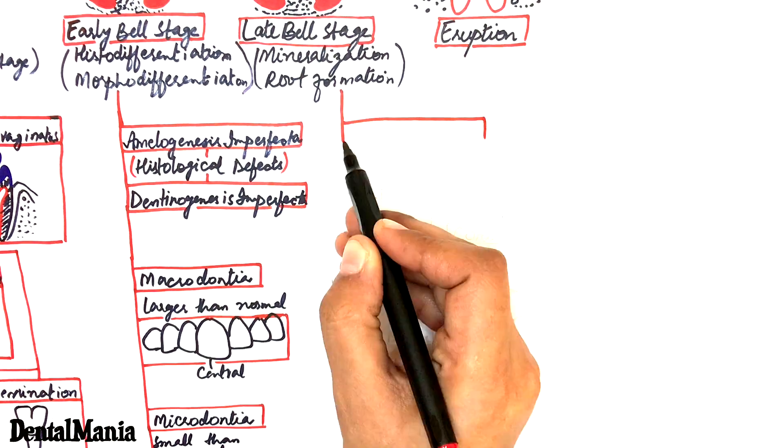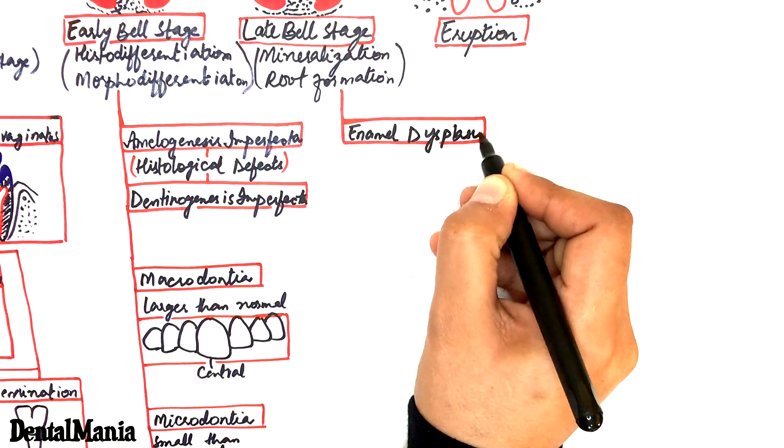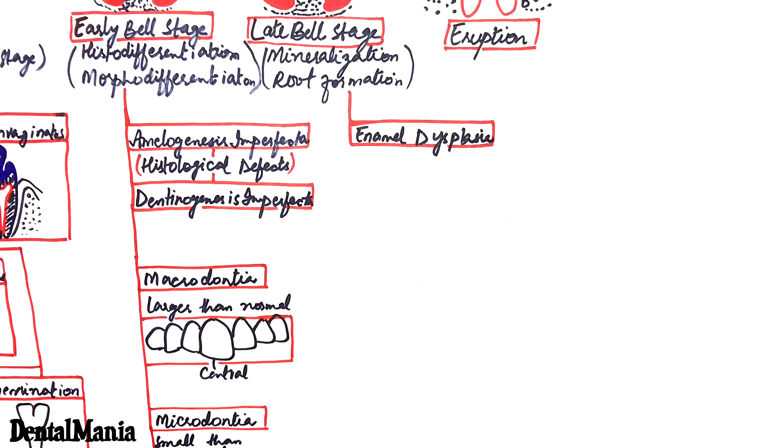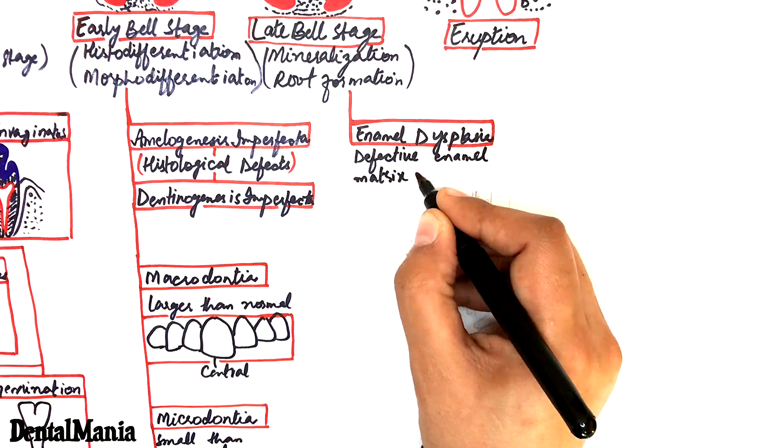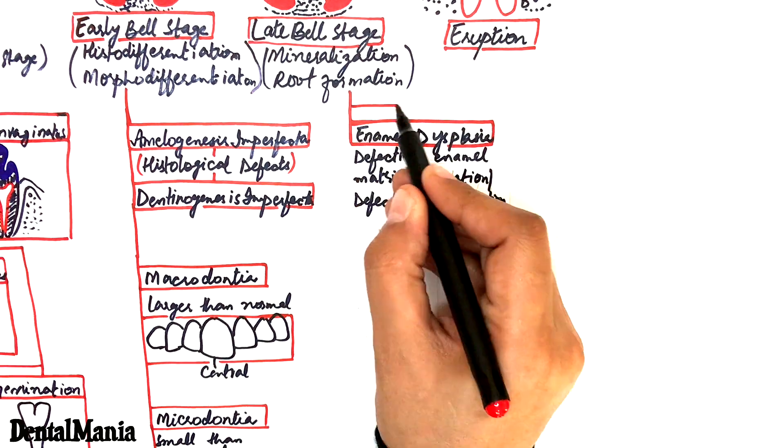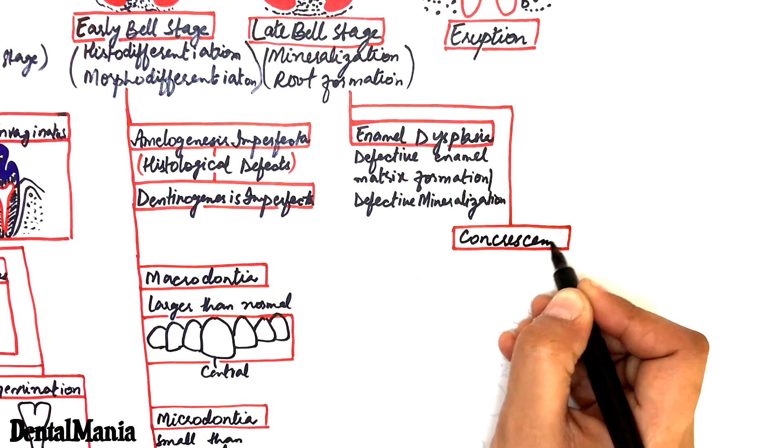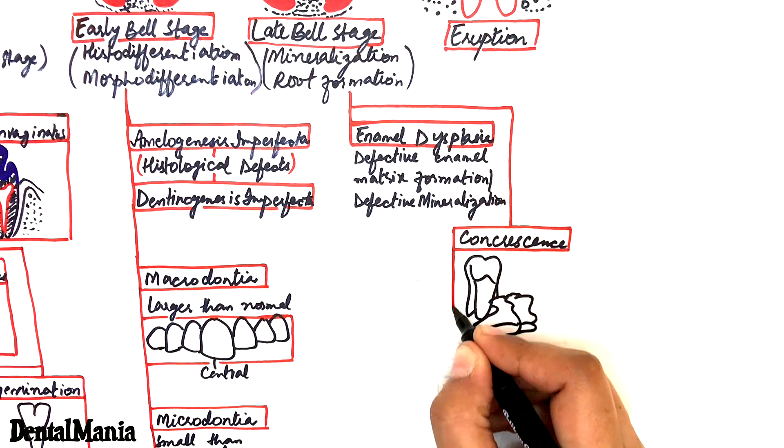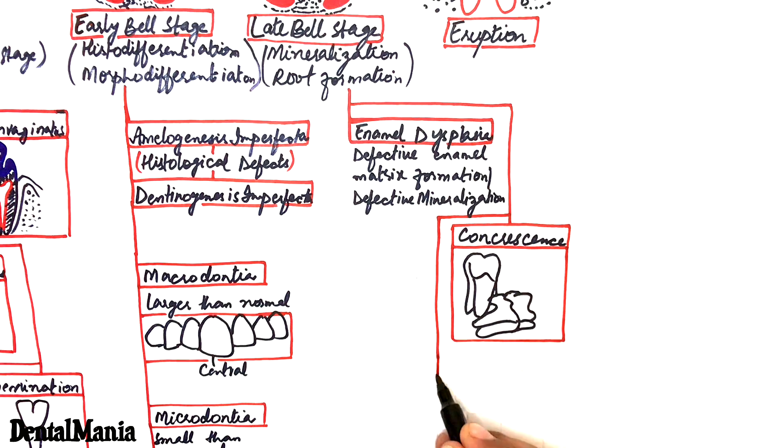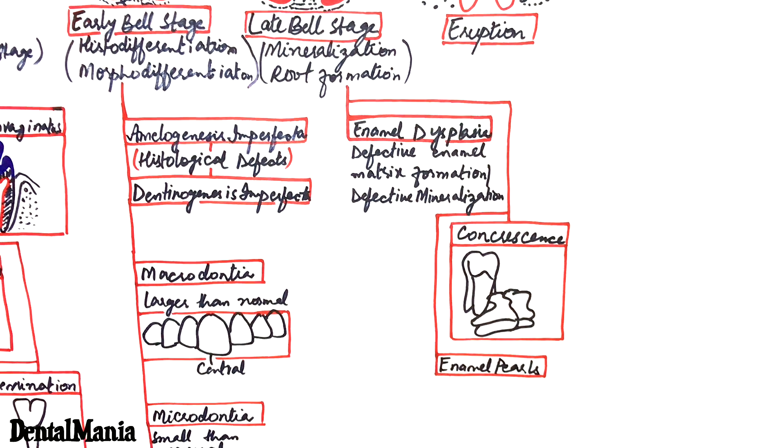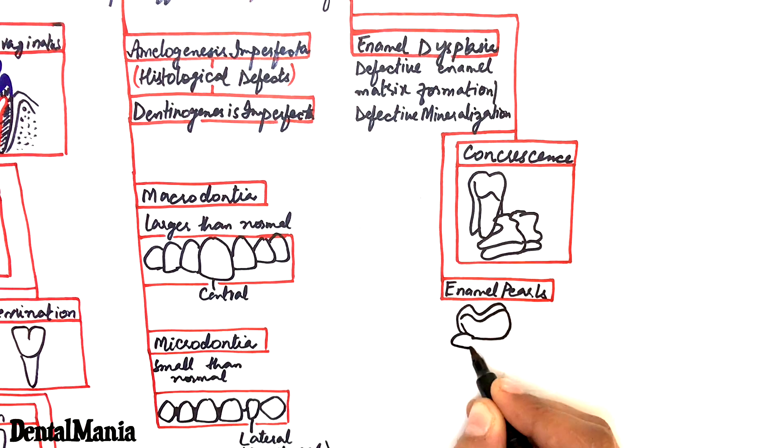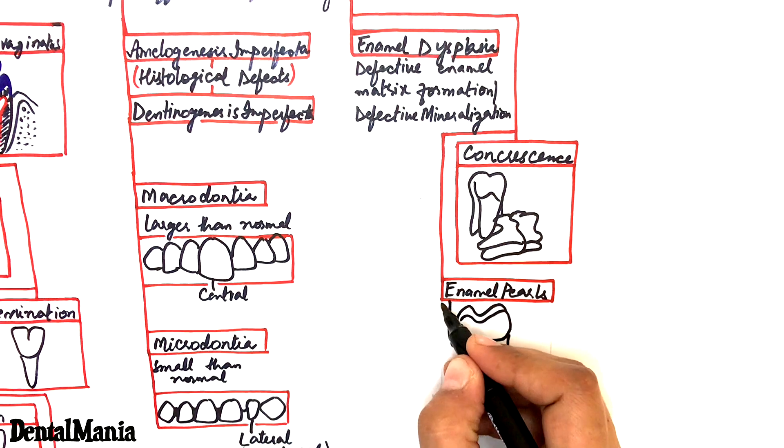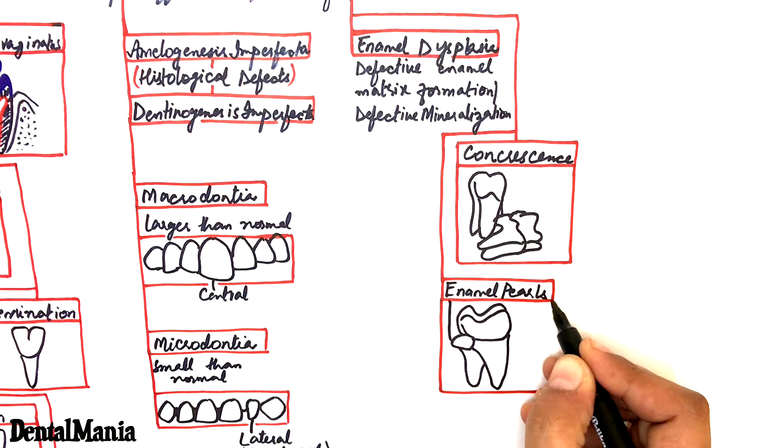The abnormalities of the tooth occurring at the late bell stage are the enamel dysplasia characterized by defective enamel matrix formation, concrescence which is the fusion of two completely formed teeth at their roots at the level of the cementum and enamel pearls which are dome-shaped calcified projections of enamel usually located at the furcation areas of the molar tooth.